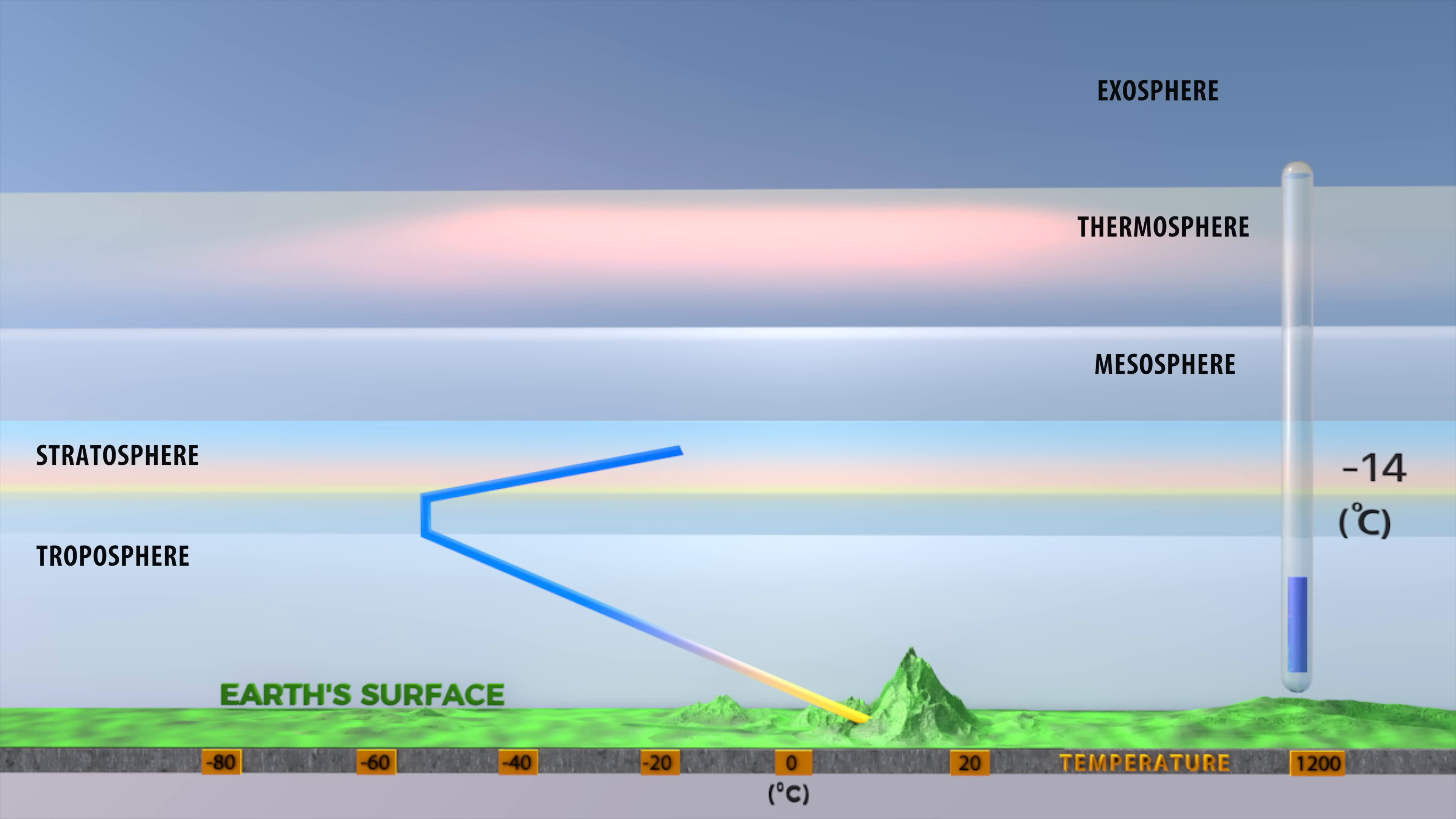In the stratosphere region, from the ozone layer the temperature progressively increases to negative 2 degrees Celsius.